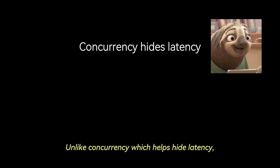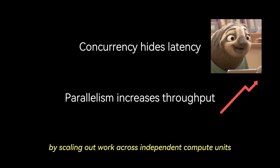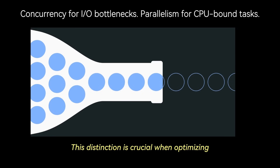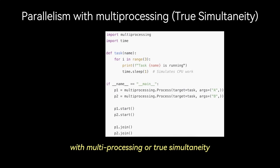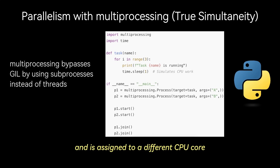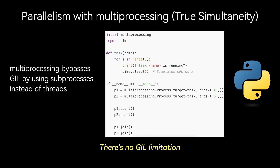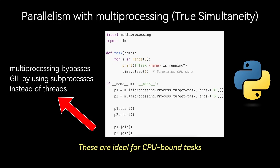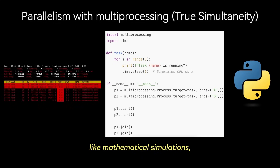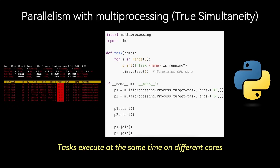Unlike concurrency, which helps hide latency, parallelism increases throughput by scaling out work across independent compute units. This distinction is crucial when optimizing for performance bottlenecks. Let's look at this example of parallelism with multiprocessing, or true simultaneity. Each process, P1 and P2, runs in its own Python interpreter and is assigned to a different CPU core. Tasks run simultaneously and are not just interleaved. Since they have separate memory spaces, there's no GIL limitation. These are ideal for CPU-bound tasks like mathematical simulations, encryption, or rendering — this is true parallelism, tasks executing at the same time on different cores.